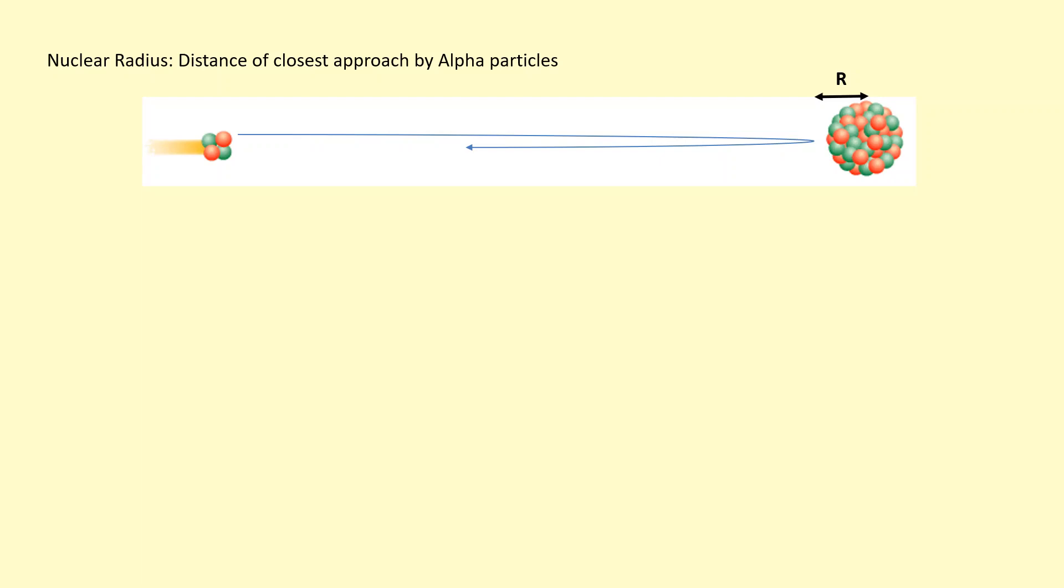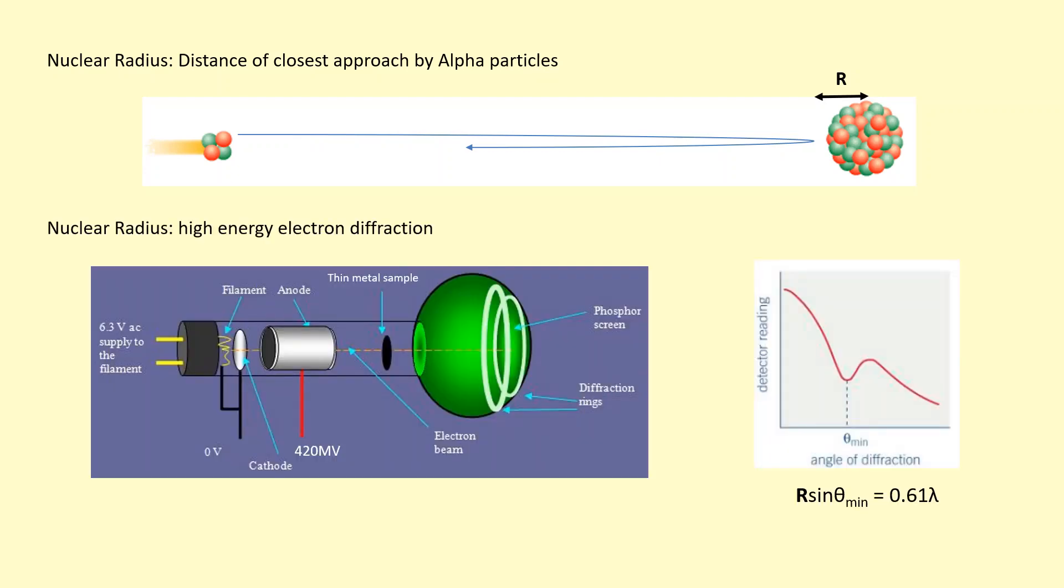I figured out the nuclear radius by firing alpha particles at the nucleus and figuring out how close they get to the nucleus. I also found out the nuclear radius by using high energy electron diffraction.